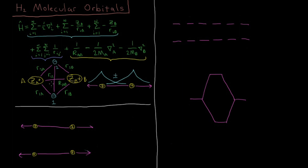The types of interactions we get are the same types of interactions we got in atoms: attractions of all of these charged particles to each other, electrons to nuclei, and electrons repelling each other as well. But the thing that is new now is the nuclei repelling each other.